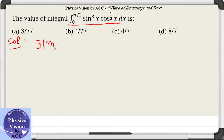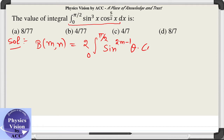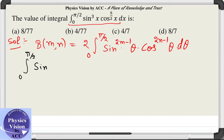Beta(m, n) is given by 2 times the integral from 0 to pi/2, with the same limits as the given integral: sin raised to the power (2m minus 1) theta, into cos raised to the power (2n minus 1) theta. By comparing this with the given integral, we have sin^(2m-1) equal to 3, so 2m minus 1 equals 3, which implies m equals 2.